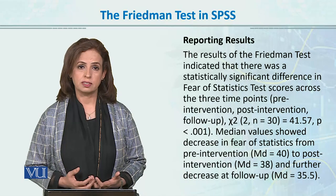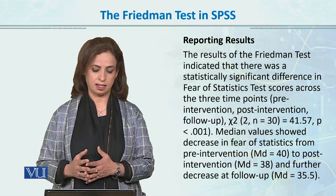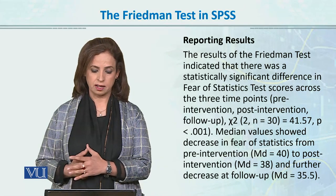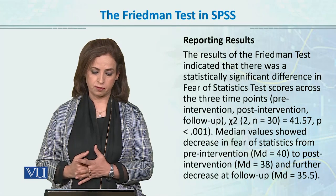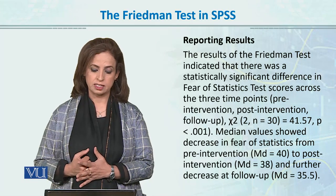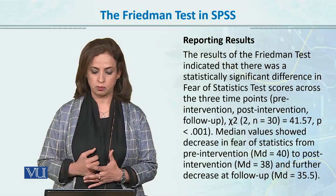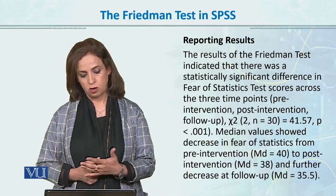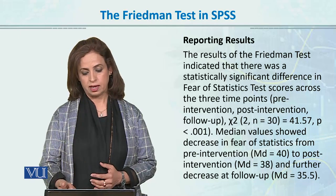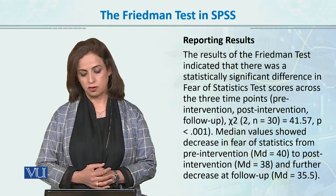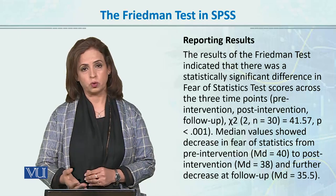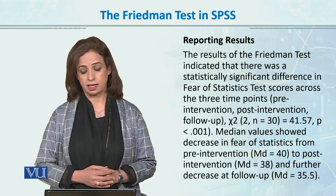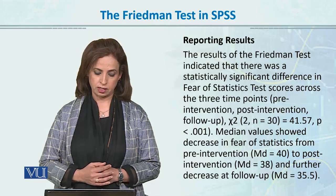Finally, how we report results from the Friedman test: following APA format, you would write — 'The test indicated that there was a statistically significant difference in fear of statistics test scores across three time points: pre-intervention, post-intervention, and follow-up.' You provide the N size and values for all three. Chi-square value at N=30 is 41.57. Degrees of freedom is 2 (because 3 minus 1 = 2). The test value is 41 and P is the significance value.